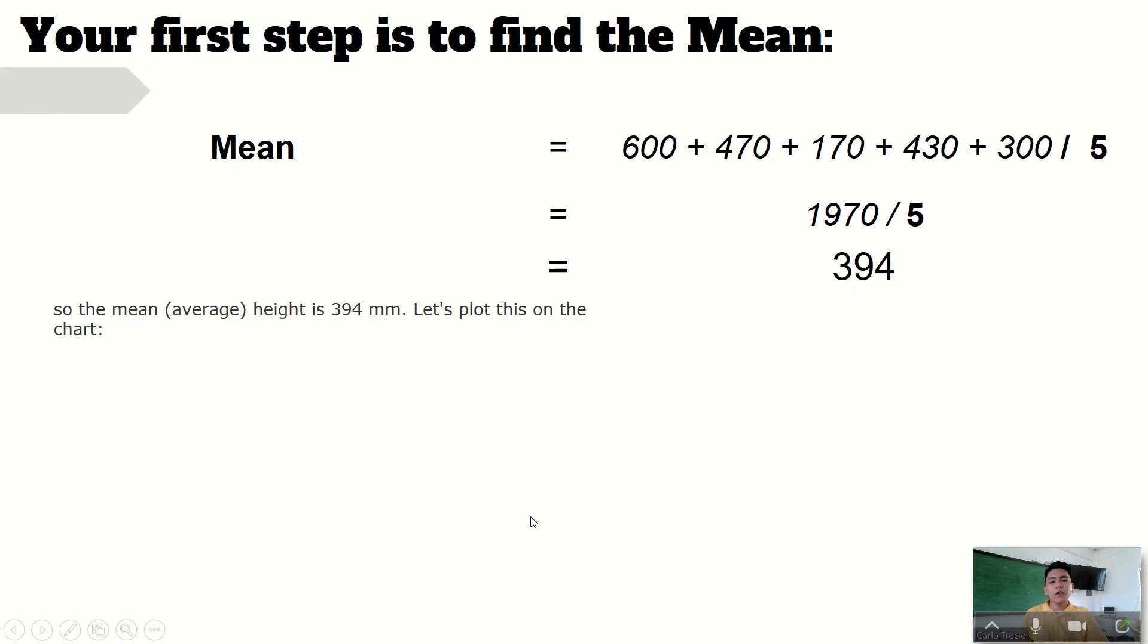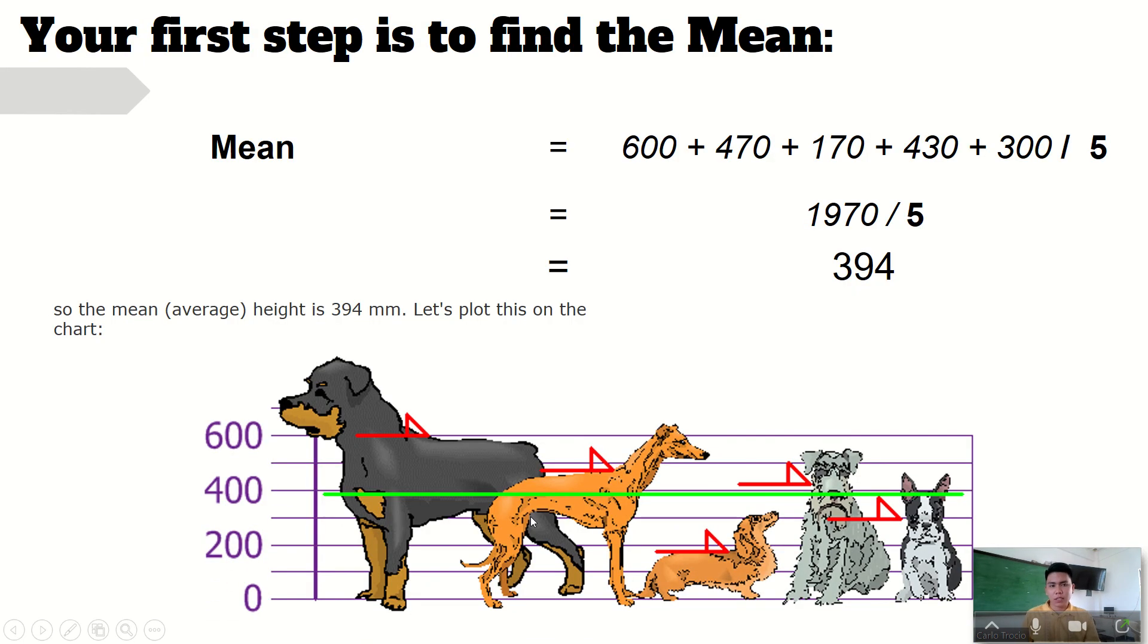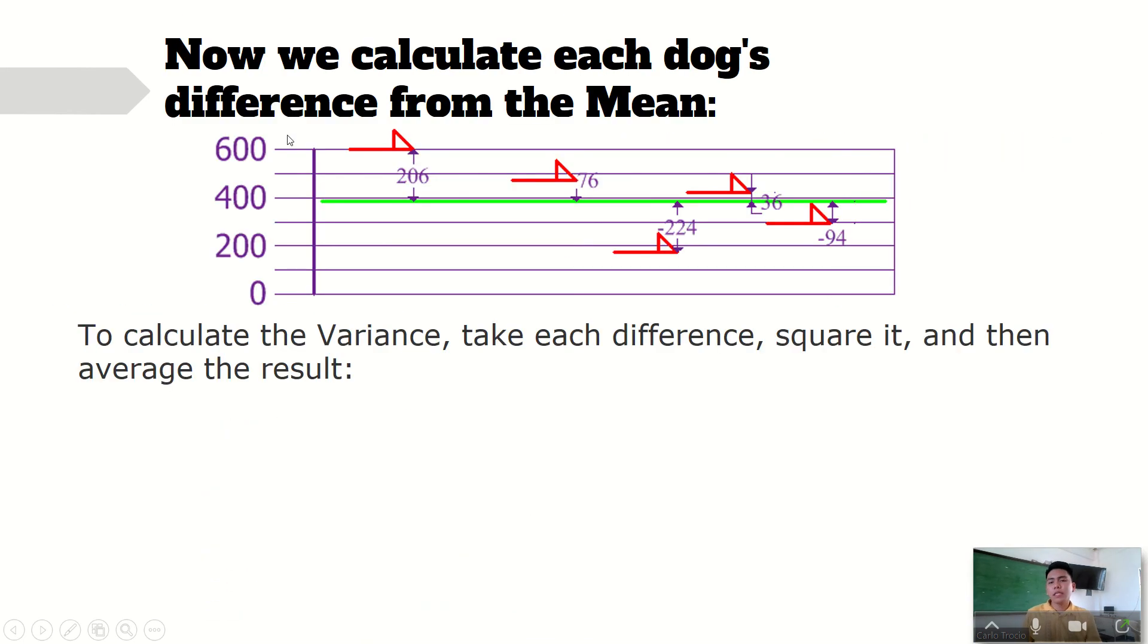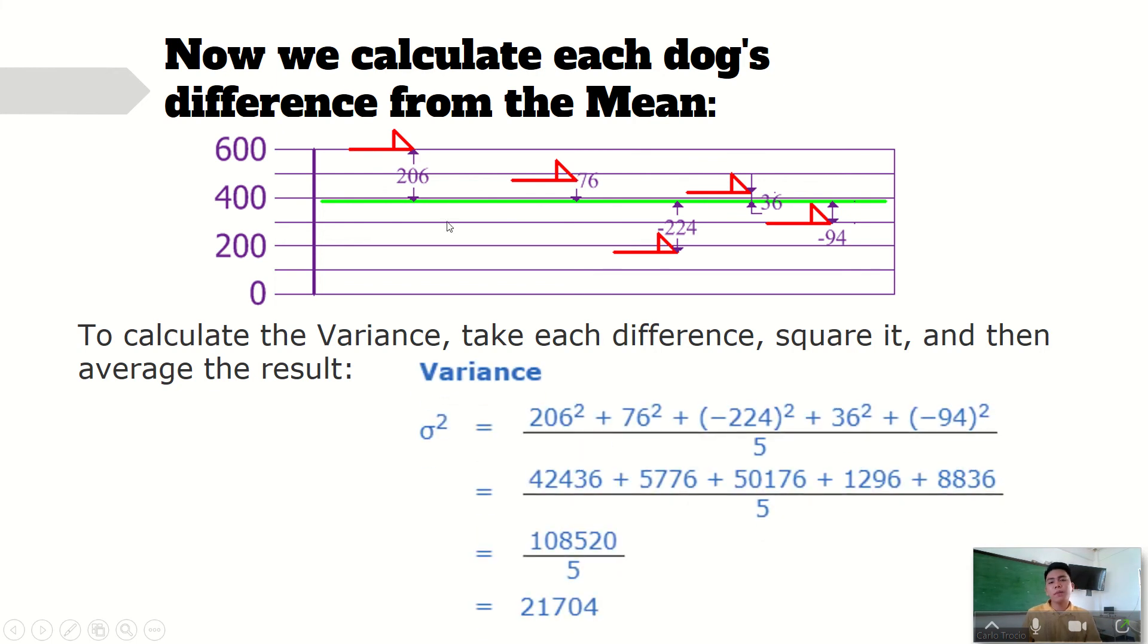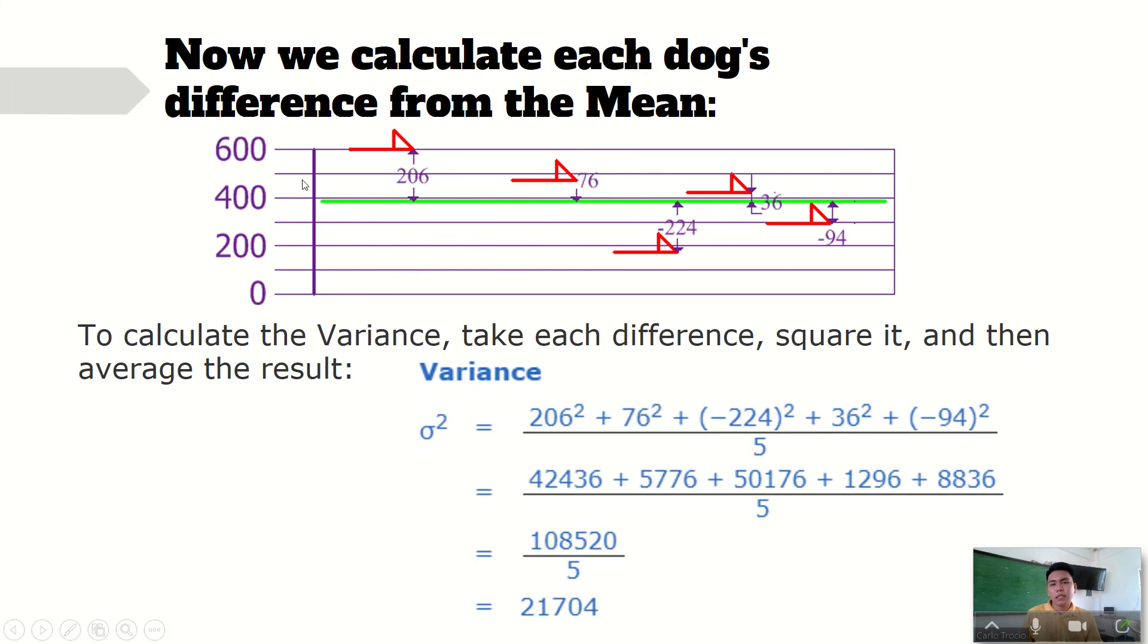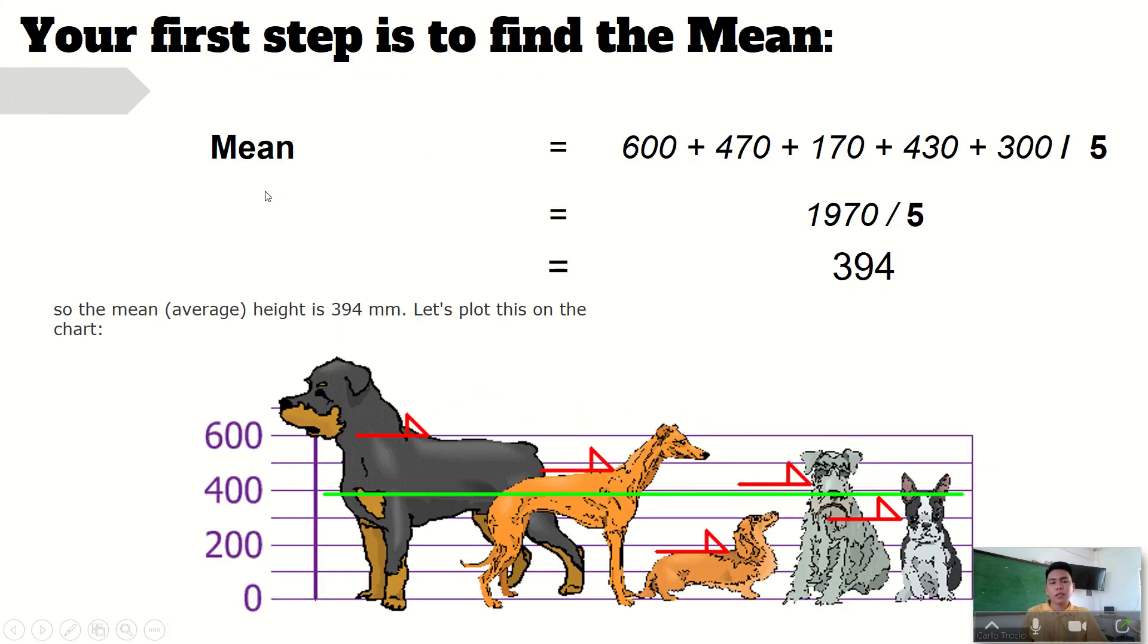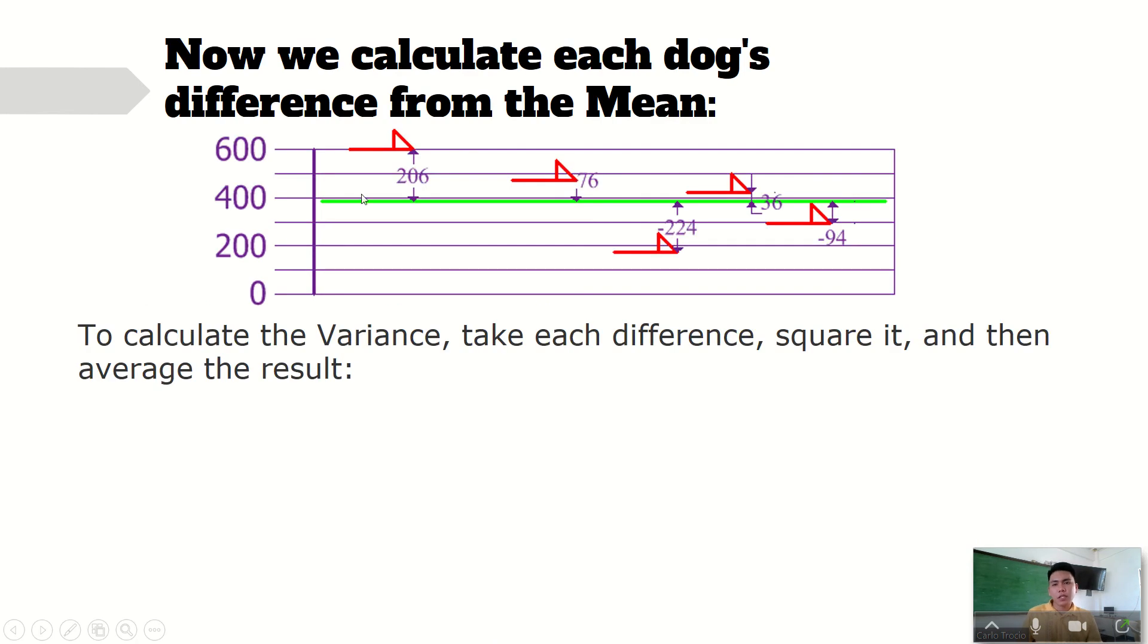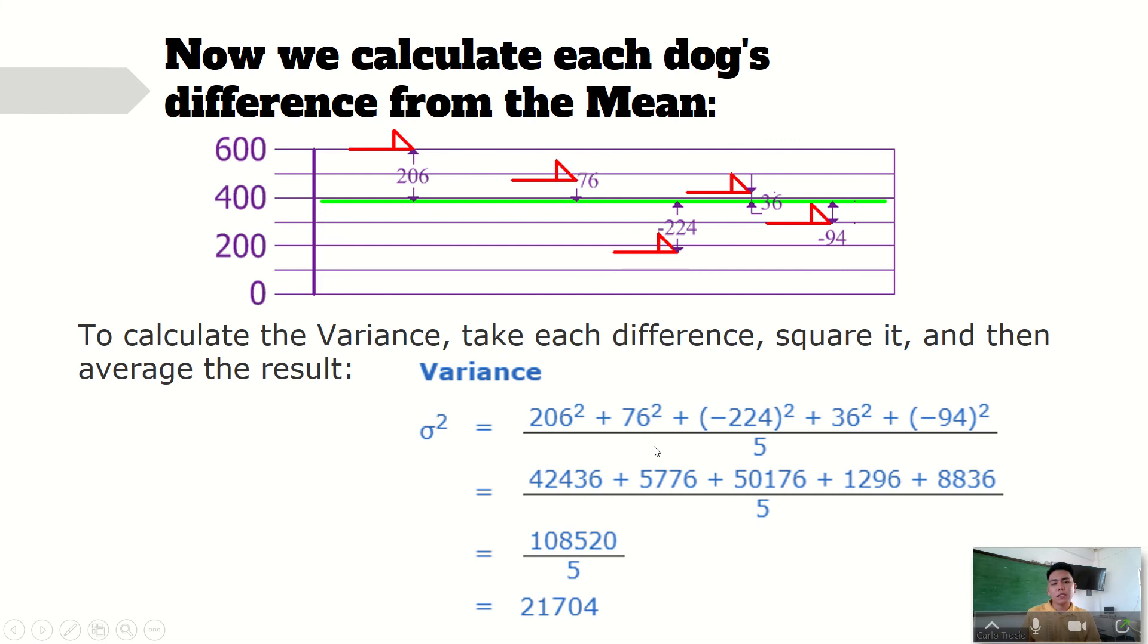So 600 mm minus the mean which is 394, that will be equal to 206. And then again our mean is 394. Next data is 470. 470 minus 400, that is 76.